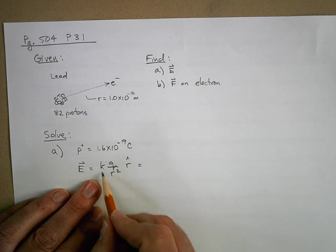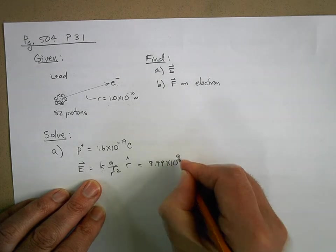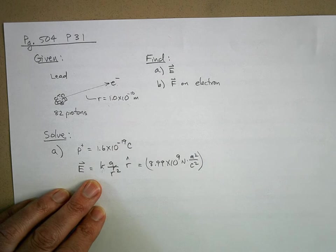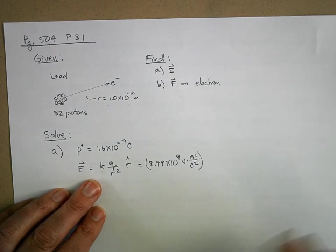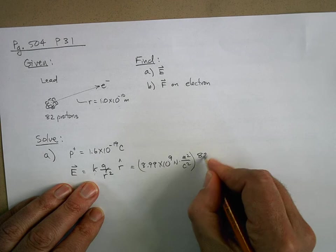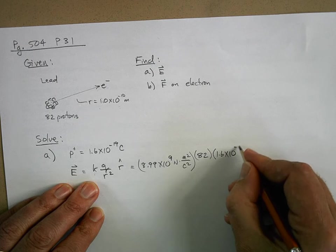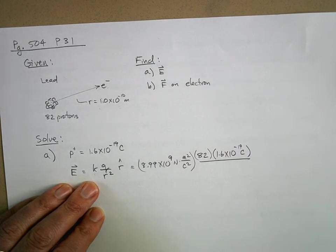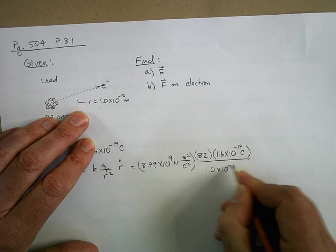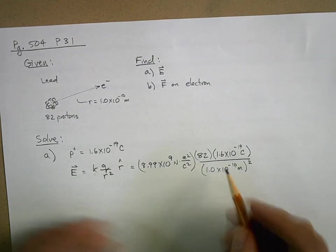What is k? 8.99 times 10 to the positive 9 newton meter squared per coulomb squared. That's the electric constant that tells us how strong electric forces are in our universe. Then we need the total charge here. We have 82 protons, and the charge on each proton is 1.6 times 10 to the negative 19 coulombs. Then we have this very tiny distance, but of course we're going to need to square that, and then we have the r hat direction.